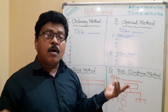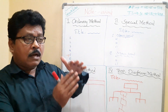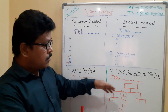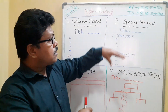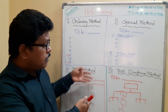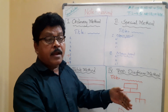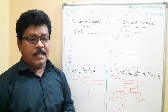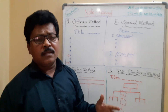The fifth method is the combination or combo method, where you mix methods — for example, half ordinary and half tree diagram, or half special and half tabular. Which combination you use depends entirely on your text.